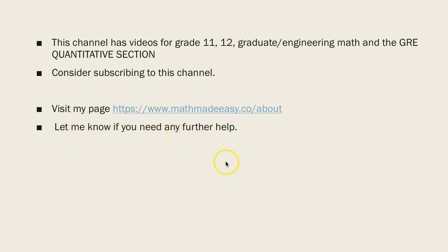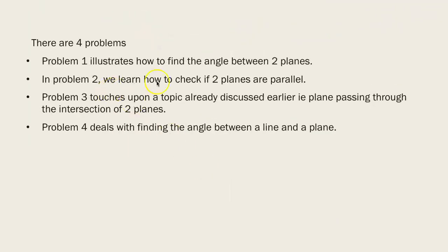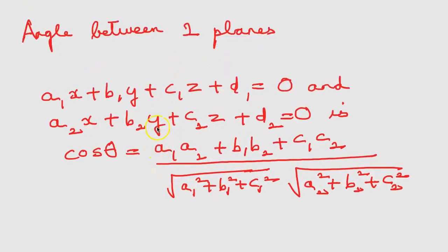There are four problems in this video. Problem 1 illustrates how to find the angle between two planes. In problem 2 we learn how to check if two planes are parallel. Problem 3 touches upon a topic already discussed earlier — that is, a plane passing through the intersection of two planes. Problem 4 deals with finding the angle between a line and a plane. So we come to the basic formula first.